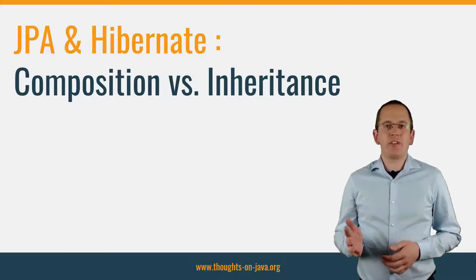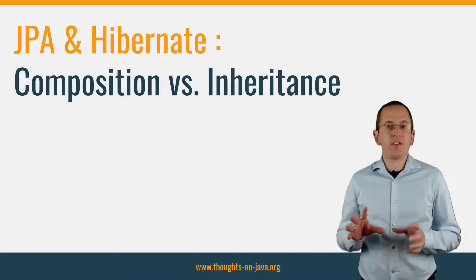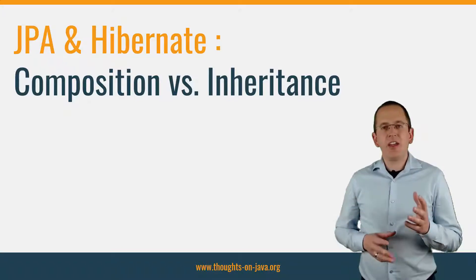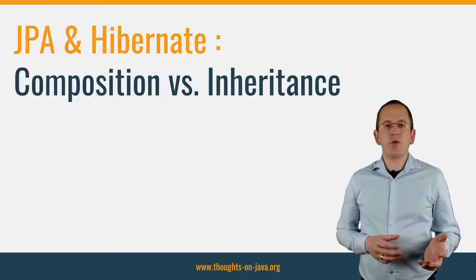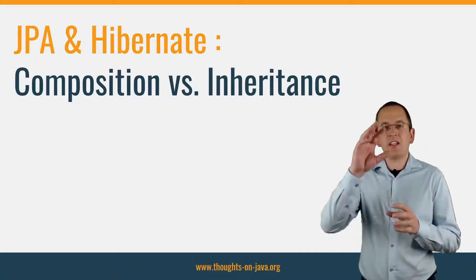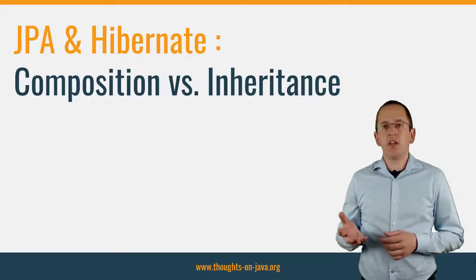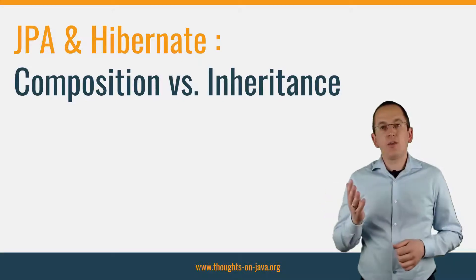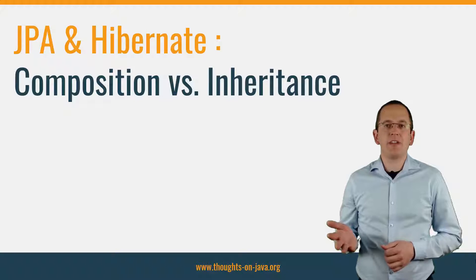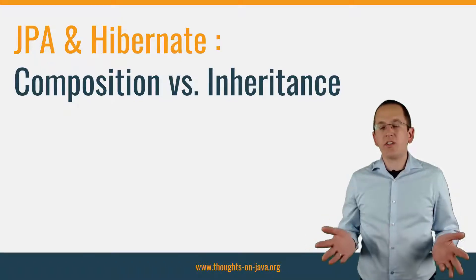Like all object-oriented programming languages, Java supports the fundamental concepts of Inheritance and Composition. There is an important difference between both concepts. Inheritance enables you to model an is-a-association between two classes by extending a superclass. Composition models a has-a-association by referencing another class in an instance variable. You can use both concepts with JPA and Hibernate, but when should you use which one, and what is the best way to do that?